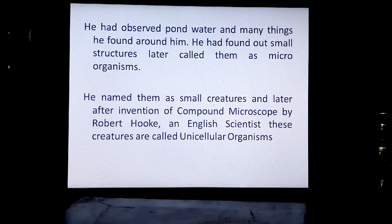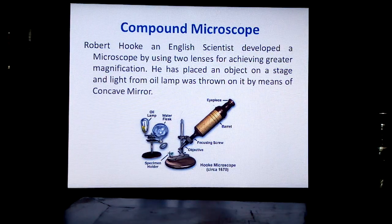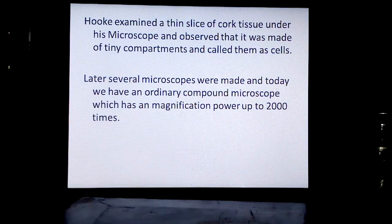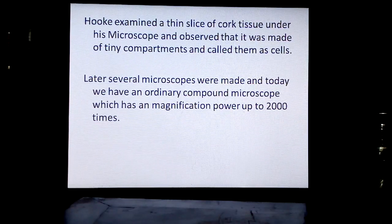He named them small creatures, and later after the invention of the compound microscope by Robert Hooke, an English scientist, these creatures were called unicellular organisms. Robert Hooke developed a microscope using two lenses for greater magnification, called the compound microscope. He placed an object on a stage and light from an oil lamp was thrown on it by means of a concave mirror. Hooke examined a thin slice of cork tissue under his microscope and observed tiny compartments, which he called cells.